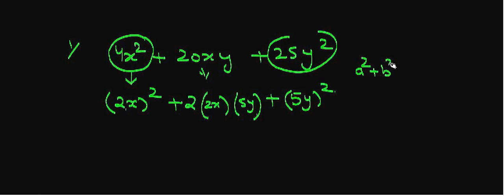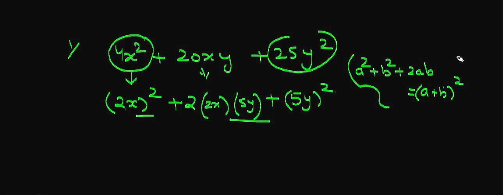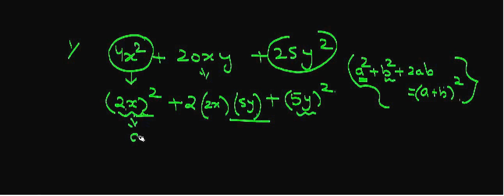We know this identity: a² + b² + 2ab is equal to (a + b)². If we compare this expression with this identity, we observe that in place of a, we have 2x, and in place of b², we have 5y.